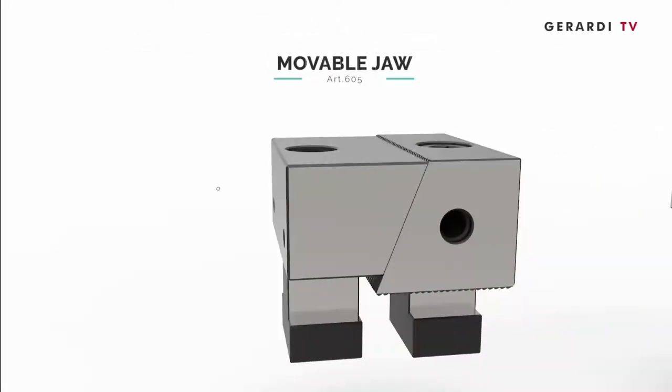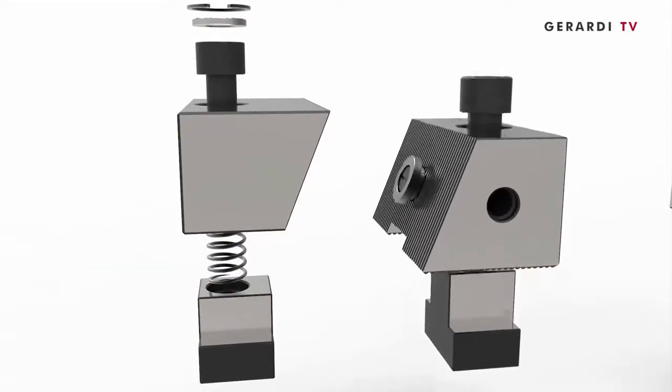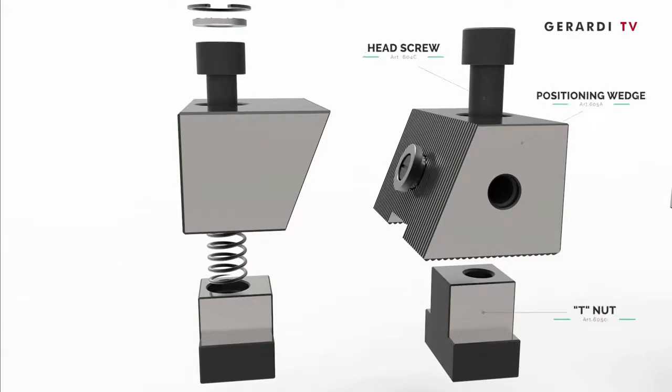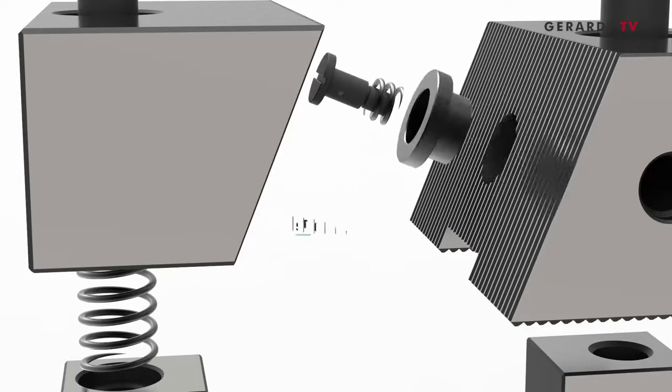With this system, it is possible to be work-holding flexible, keeping or holding the standard base clamped to the machine table and changing only the position, the number, and the types of the movable jaws needed to change from a job-work cycle to a different one.